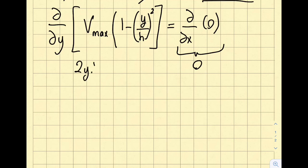I'm going to obtain minus 2y times V max divided by h squared. This is what I'm going to obtain for the left-hand side, and obviously this is not equal to zero, because V max is a number, y is a variable. It can be zero at y equals zero, but it's not zero everywhere.